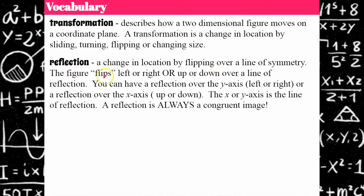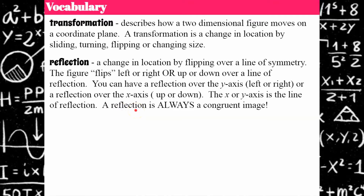The figure flips — reflects left or right or up or down — over the line of reflection. You can have a reflection over the y-axis, which moves the figure left or right, or over the x-axis, which moves it up or down. The x or y axis is then the line of reflection. Remember that a reflection always produces a congruent image, just as we learned with translations.